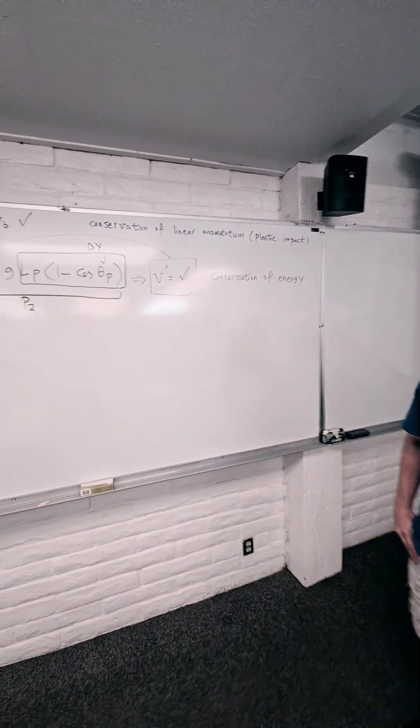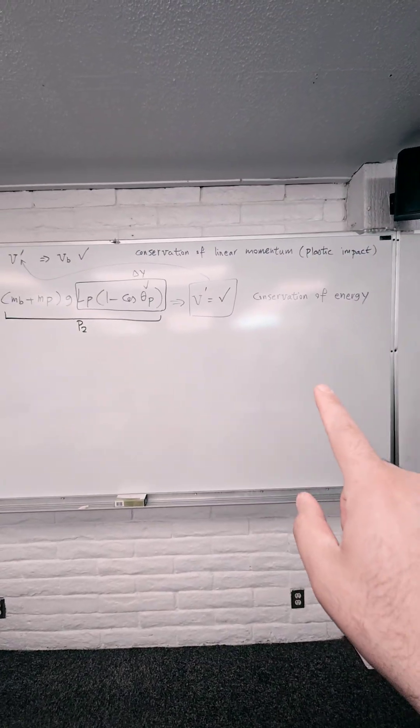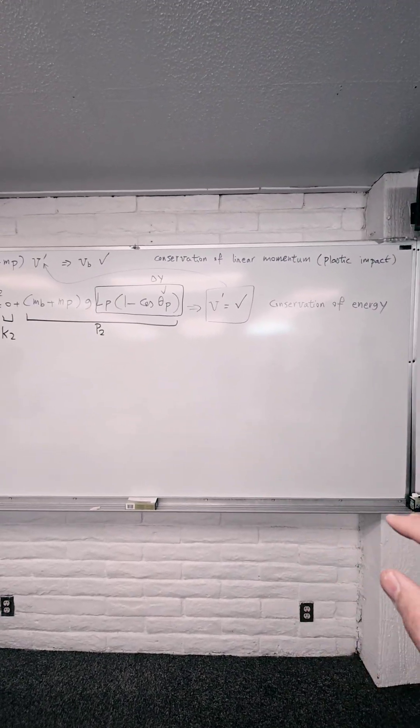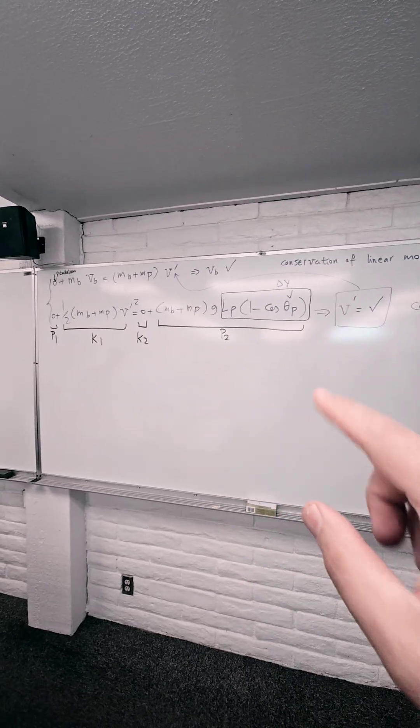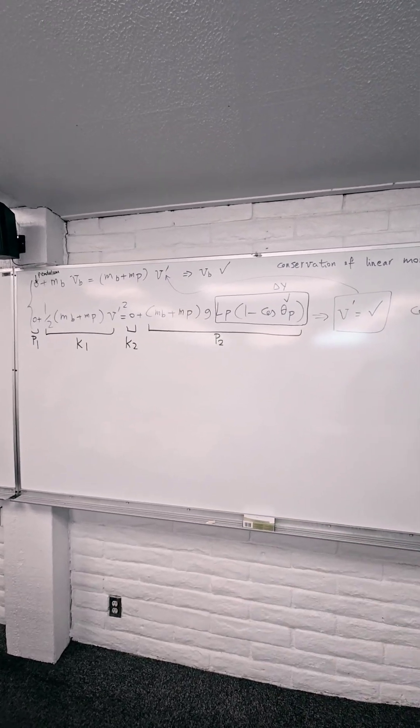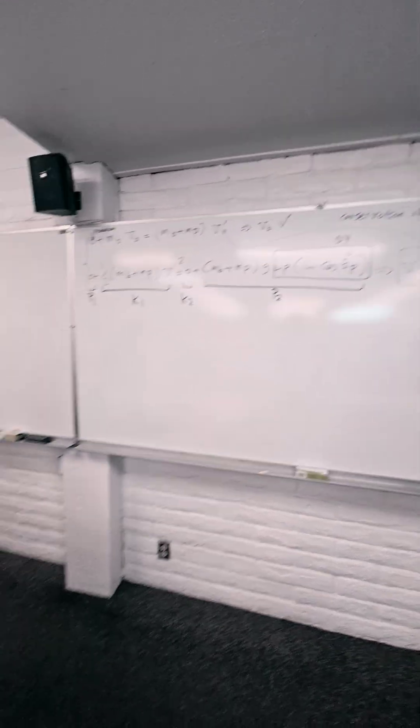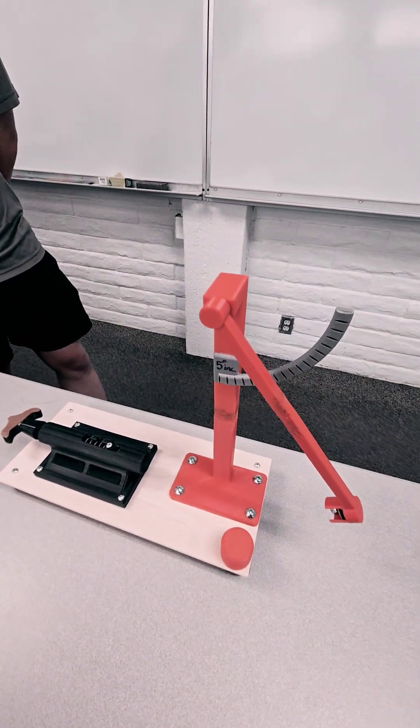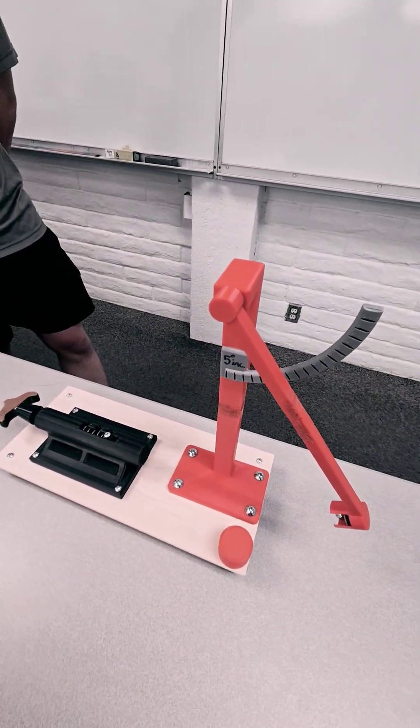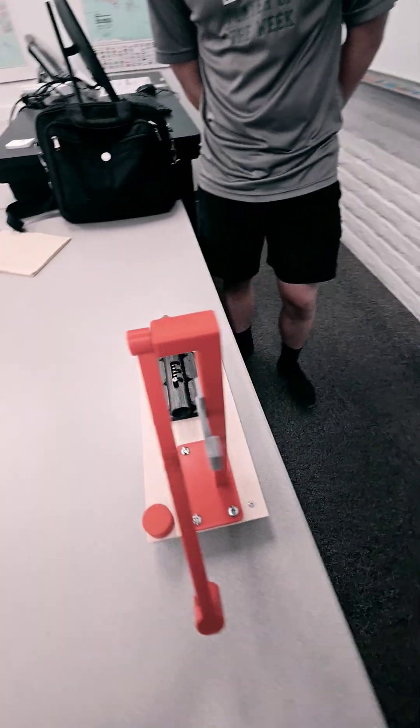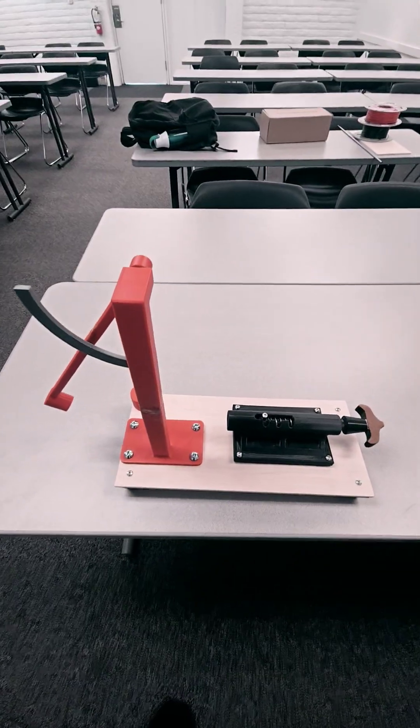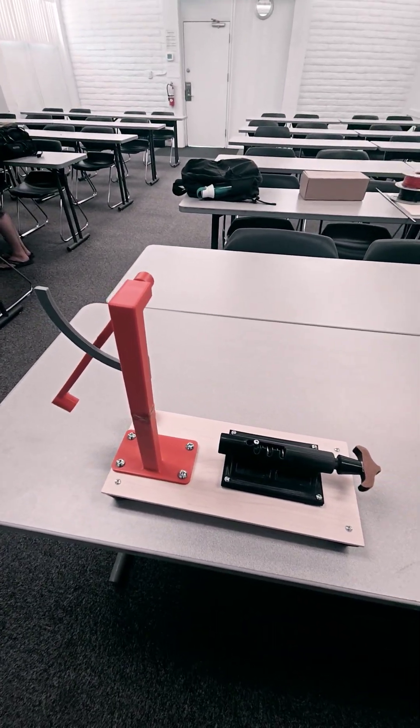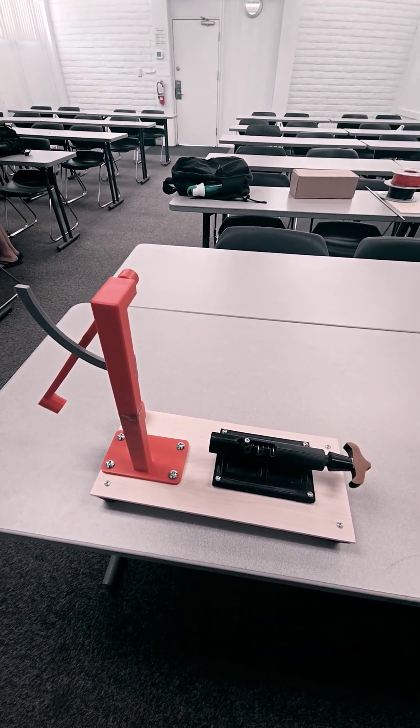Yes, exactly. So the conservation of energy gives you v prime, the velocity after the impact, plug it back, and that gives you the ballistic velocity VB before impact. So this is a very effective yet simple device that Ben and Sebastian made at an extremely low price, all based on their effort as a project for this class. Thank you both and thank you all for your attention.